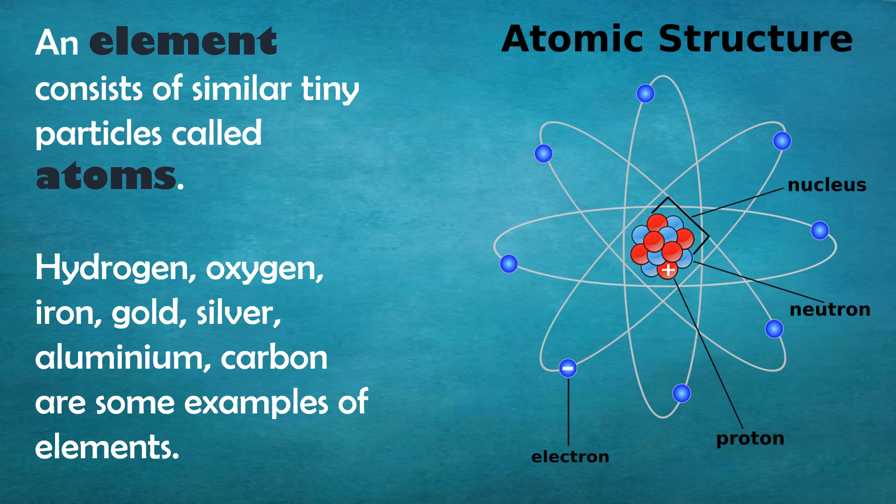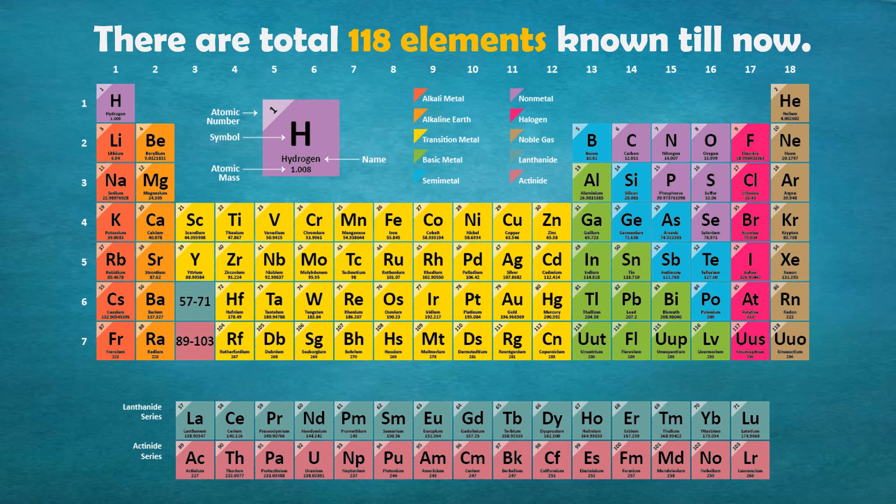Hydrogen, oxygen, iron, gold, silver, aluminium, and carbon are some examples of elements you might be familiar with. There are a total of 118 elements known till now. Most of these elements are naturally occurring, while some have been prepared artificially in labs.